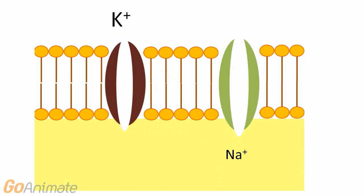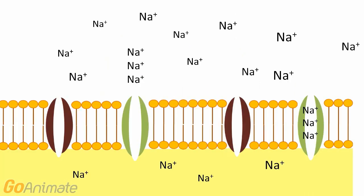The protein channels allow for the movement of sodium and potassium in and out of the cell. There is a higher concentration of sodium outside of the cell than in.